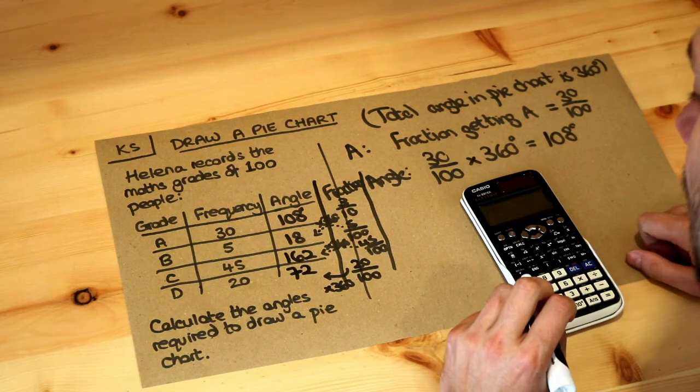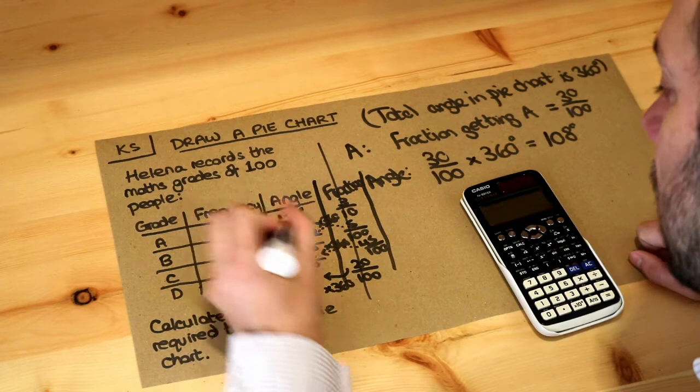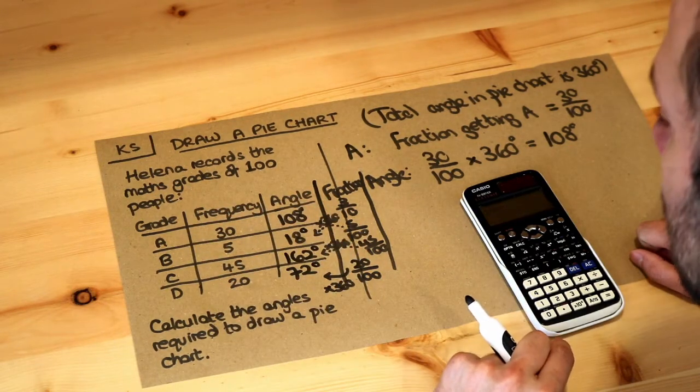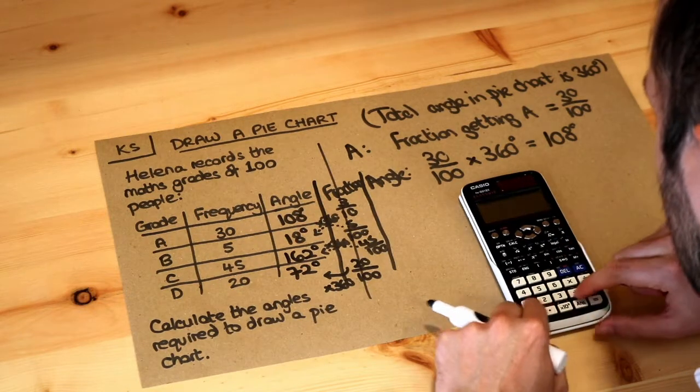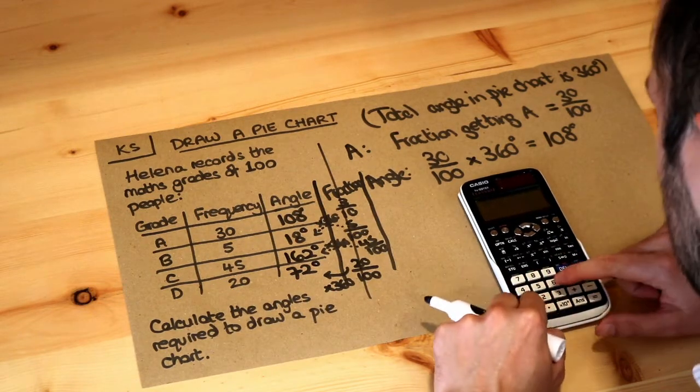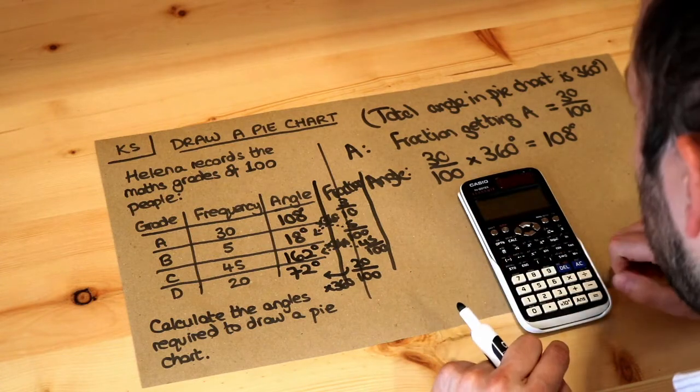Now I always do a check at the end. Does the total angle add up to 360 degrees? Because we know in a pie chart, the total angle, a full spin, would be 360 degrees. So we do 108 plus 18 plus 162 plus 72, and indeed we do get 360 degrees.